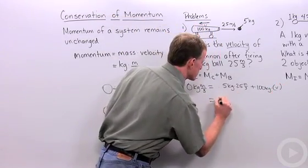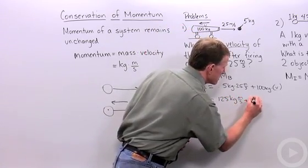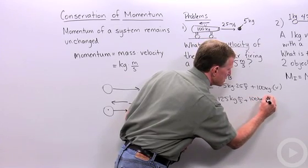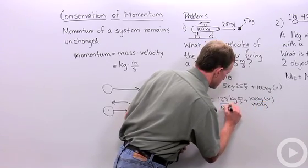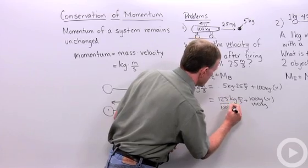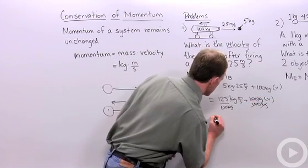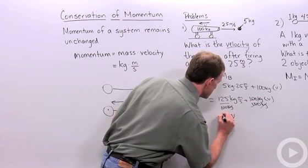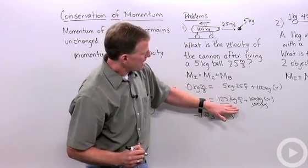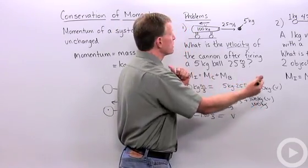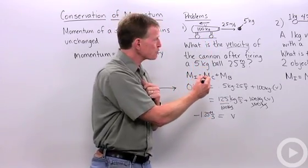If we simplify this, we have 5 times 25 is 125 kilograms per meter squared plus 100 kilograms times V. I'm going to divide by 100 kilograms, and when I do that my units cancel, and I'm going to get V is going to equal negative 125 meters per second. Because if I have a positive velocity here, I have to have a negative velocity to equal that, so in this case this velocity is going to be negative 1.25 meters per second.